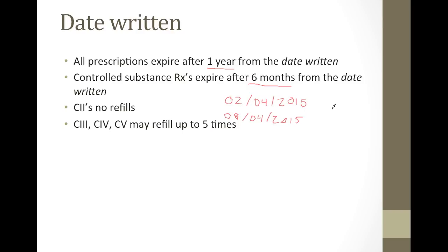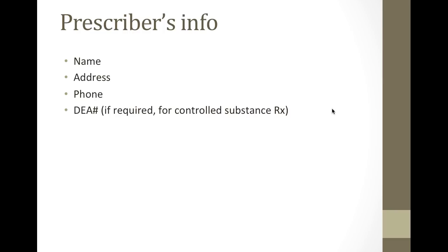It's also important to remember that C2 prescriptions or controlled 2 medications are not allowed to have refills. The C3 through C5 may be refilled up to five times. Prescriber information also needs to be on the prescription in case we need to contact the doctor's office. The prescriber's information includes the prescriber's name, the address, the phone number, and also a DEA number or an NPI number if the prescription is written for a controlled substance.